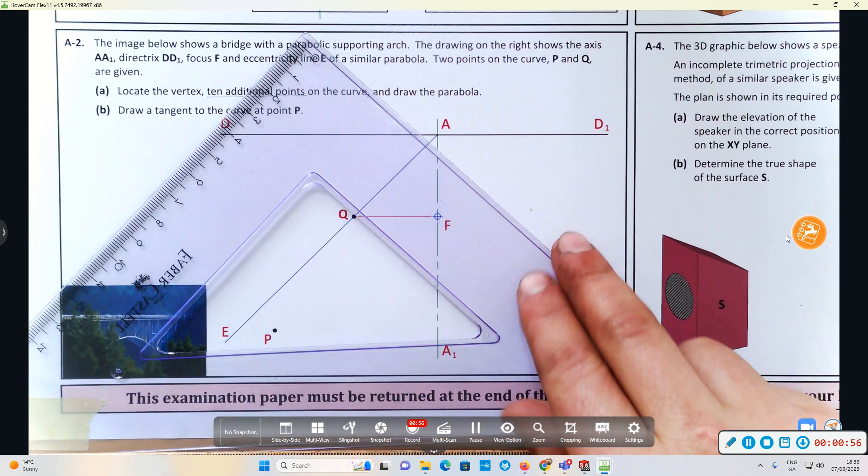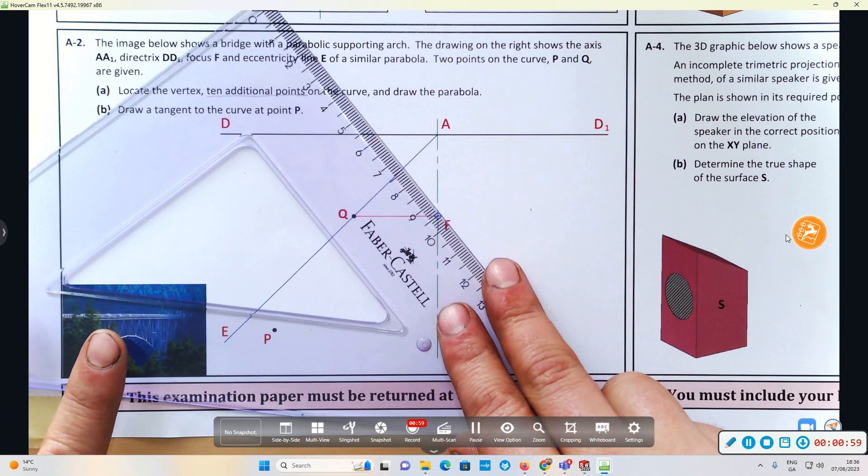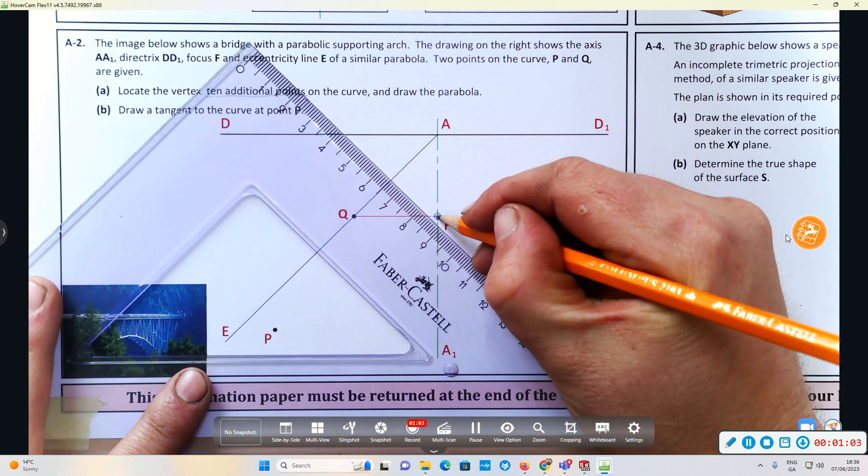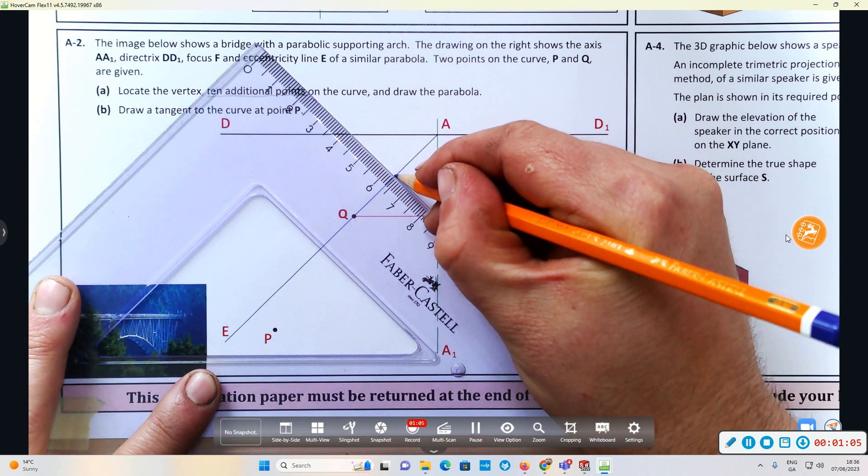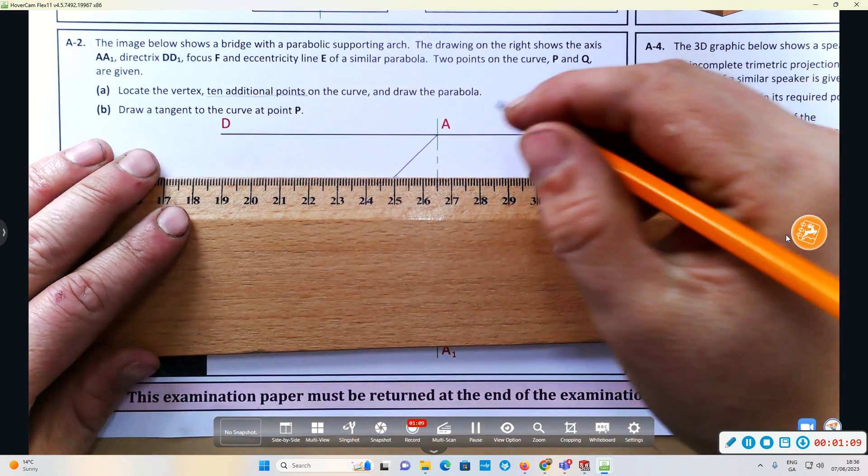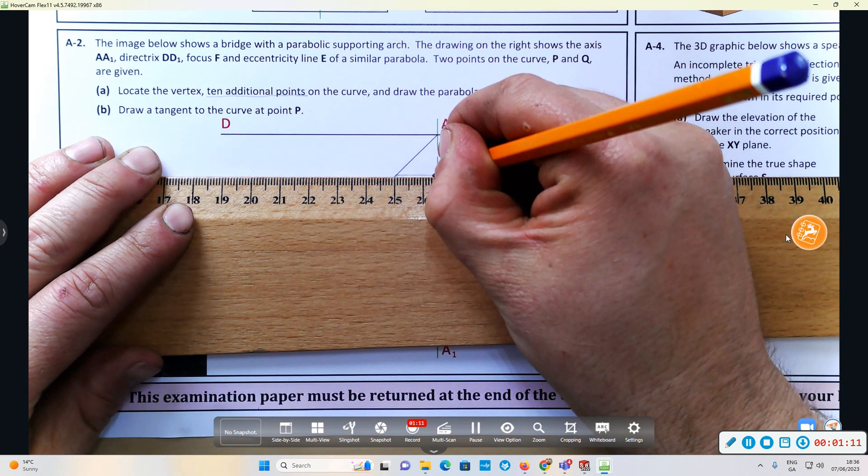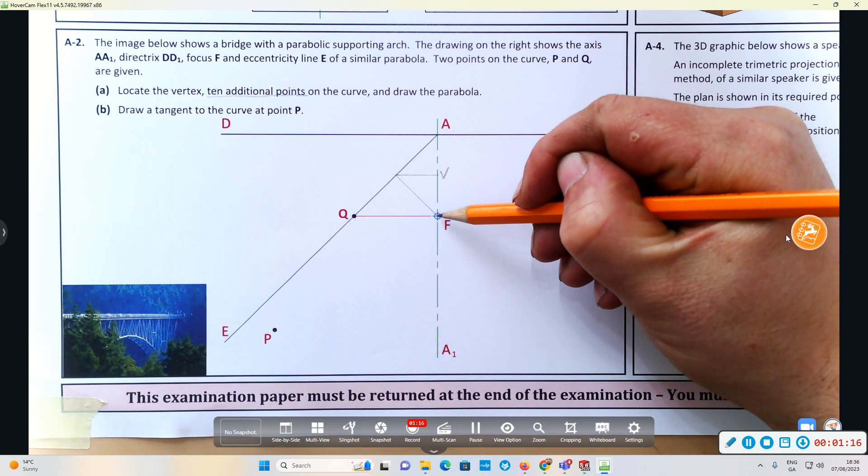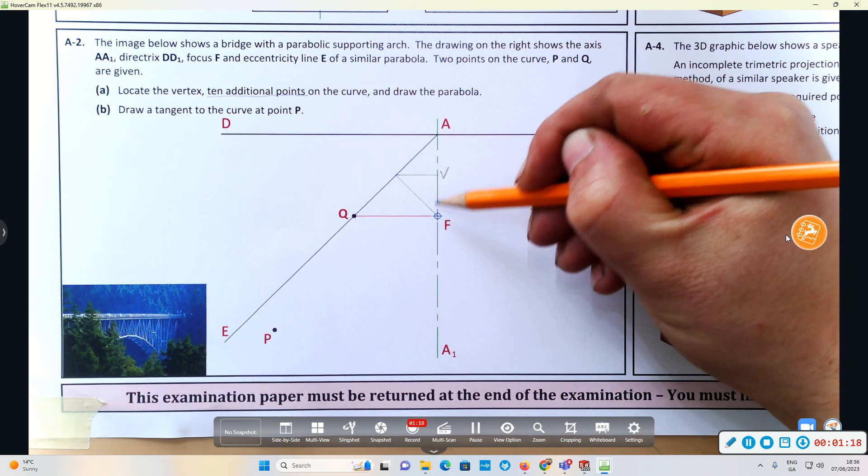To get the vertex, something you can do in every conic section is go back at 45 degrees to hit the line of eccentricity, then go parallel to the directrix or perpendicular to the major axis to get the vertex.